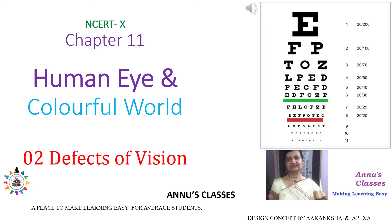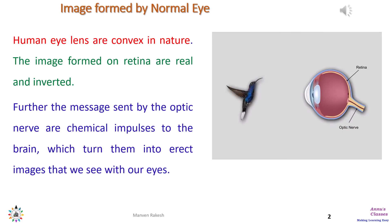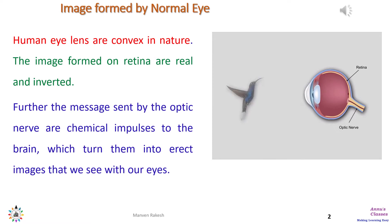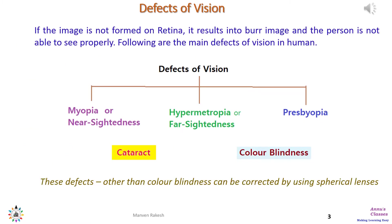Hello students, welcome to the second video on Human Eye and Colorful World, Chapter 11 for Class 10. In this video we will learn about the defects of vision. Human eye lenses are convex in nature. The image formed on the retina is real and inverted. Signals of this image are sent through the optic nerve to the brain. If the image is not formed on the retina, it results in blurry vision. The main defects of vision are myopia or nearsightedness, hypermetropia or farsightedness, presbyopia, and cataract.